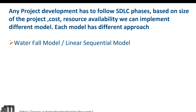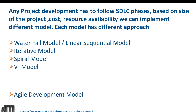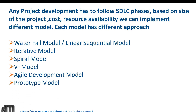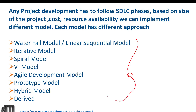The waterfall model, which is called the linear sequential model, is what we'll discuss today. We also have iterative model, spiral model, V-model, agile development model - which is very frequently used nowadays and very important - prototype model, hybrid model, and derived model. These are the different models in the industry. Today we'll focus on waterfall model, and in coming days I'll explain each and every model.